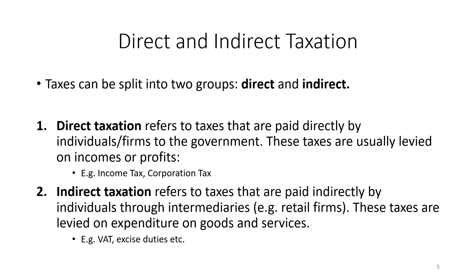By contrast, indirect taxation refers to taxes that are paid indirectly by individuals through intermediaries such as retail firms. Unlike direct taxes, indirect taxes are not paid by the people who owe them — they are paid by intermediaries like retail firms and small businesses that collect the taxes from individuals at the point of sale. We can see this with VAT: when you pay 20% VAT on goods and services, you don't pay that VAT directly to the government, but you pay it to the business, and then it's the business's responsibility to pass that on to the government. So clearly VAT is an indirect tax.